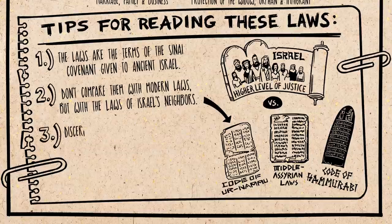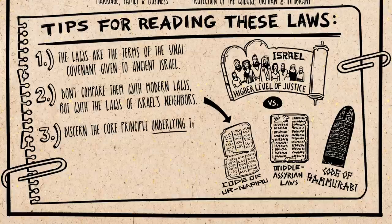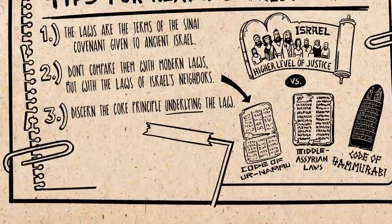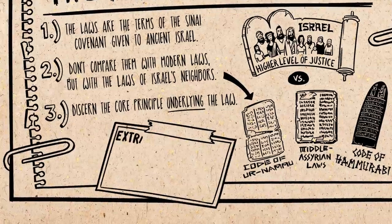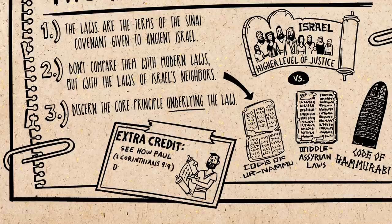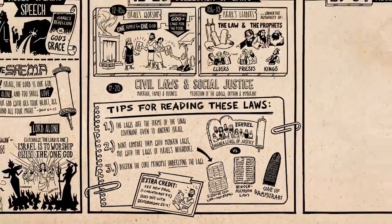So finally, try to discern what core principles of wisdom or justice underlie any particular law, and you will discover some really profound things. Here is an extra credit assignment: go see how Paul the Apostle does this very thing in his first letter to the Corinthians, chapter 9, verse 9, where he quotes a law from Deuteronomy, chapter 25, verse 4. It is really interesting.